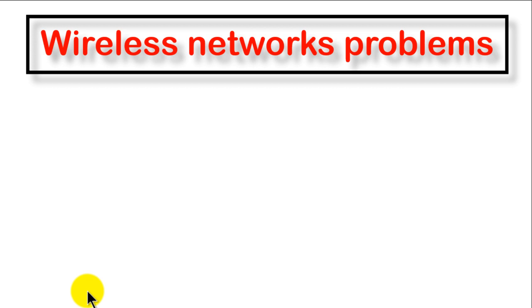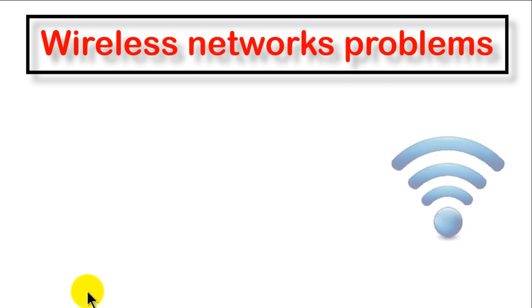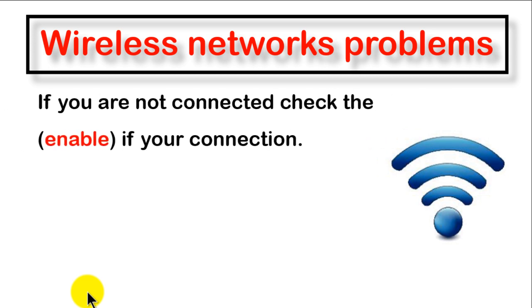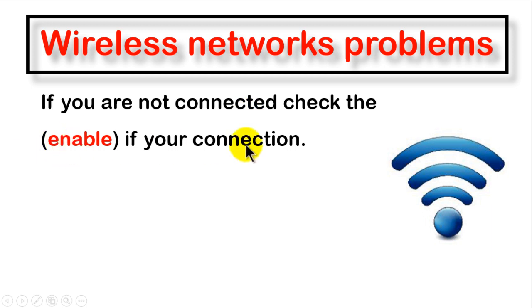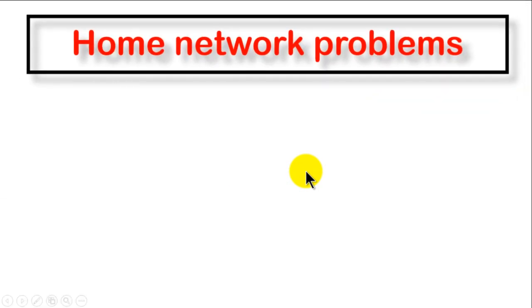For wireless network problems, it is also very easy to solve. If you are not connected to a network — for example if you decide to access the internet using Wi-Fi and are not connected — simply check that your Wi-Fi is enabled. Check that the Wi-Fi button is active; if it is not active, just click or press it and you can be connected.